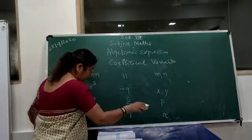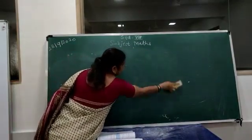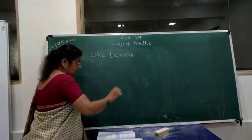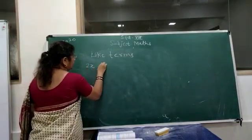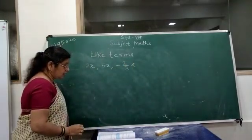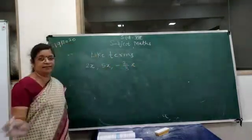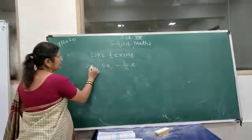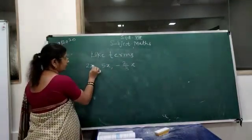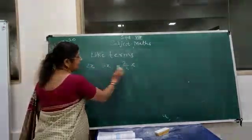Now we will learn about like terms. What do you mean by like terms? Consider 2X, 5X, minus 2 upon 3 X. In this case, the power of X is the same in all terms. When the power of the variable is the same, we call them like terms.